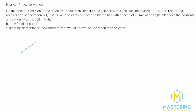We have a velocity vector representing 25 meters per second, with the x-component labeled v_ix and the y-component labeled v_iy, hit at an angle of 30 degrees above the horizontal. For part A we have to figure out how long the ball was in the air, for part B how far it traveled, and for part C how much farther it would go on the moon than on the earth.